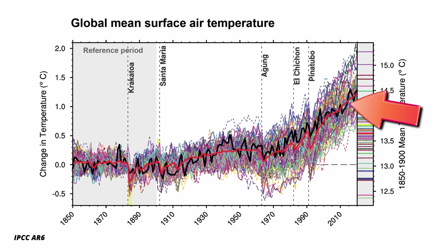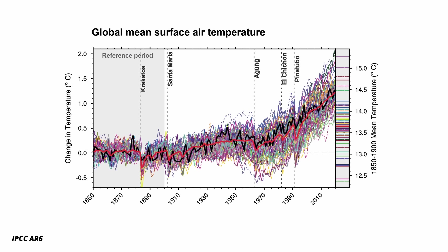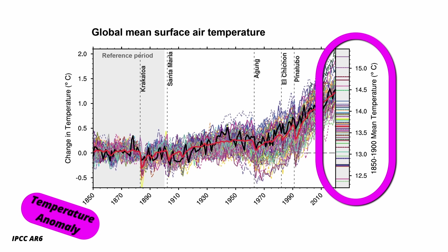The fat red line is the mean value of the models and the fat black line is the data. If you want to look for your favorite color, here's the list of models. The relevant bit I want to draw your attention to is the vertical axis. As you've probably noticed, climate scientists usually don't tell you the actual temperature — they tell you a temperature anomaly. That's the deviation from a baseline. Unfortunately, the baseline can change from one figure to the next, and as we just saw in an earlier video, this can get a bit confusing.